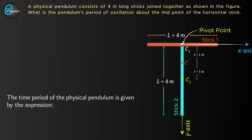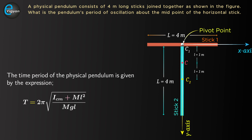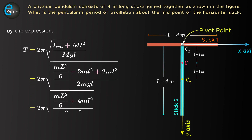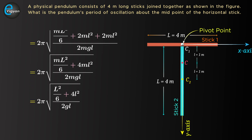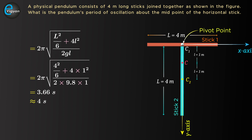Finally, the time period is T equal to 2 pi times the square root of ICM plus Ml squared upon MgL, which equals 2 pi times the square root of mL squared over 6 plus 2mL squared plus 2mL squared upon 2mgL, simplifying to 2 pi times the square root of mL squared over 6 plus 4mL squared upon 2mgL. After plugging in L equal to 4 m, l equal to 1 m, and g, we get T equal to 3.66 seconds. Applying significant digit rules, T is approximately 4 seconds, which is the final answer.